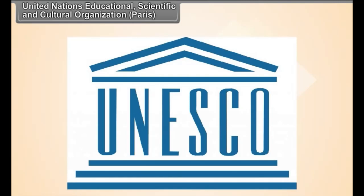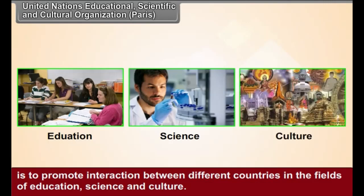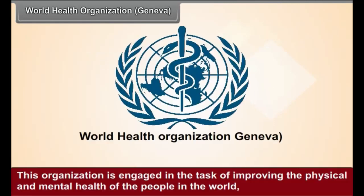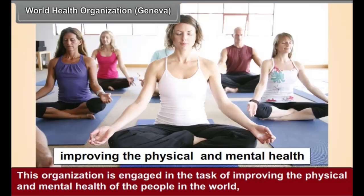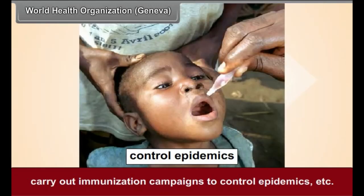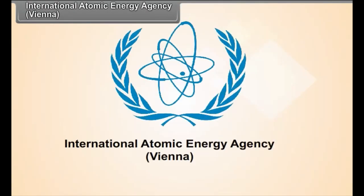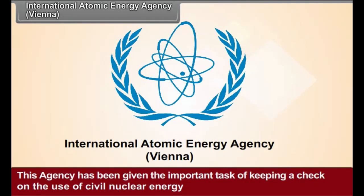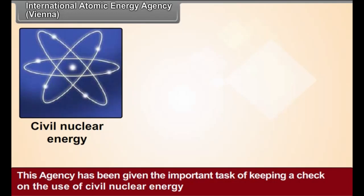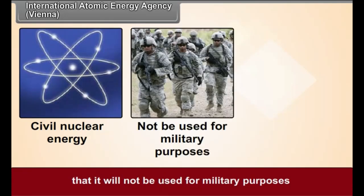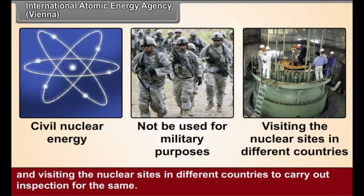United Nations Educational, Scientific and Cultural Organization (UNESCO): The main function of this organization is to promote interaction between different countries in the fields of education, science and culture. It also tries to reduce illiteracy in the world. World Health Organization (WHO): This organization is engaged in the task of improving the physical and mental health of the people in the world, and carrying out immunization campaigns to control epidemics. International Atomic Energy Agency (IAEA): This agency has been given the important task of keeping a check on the use of civil nuclear energy, ensuring it will not be used for military purposes, and visiting nuclear sites in different countries to carry out inspection for the same.